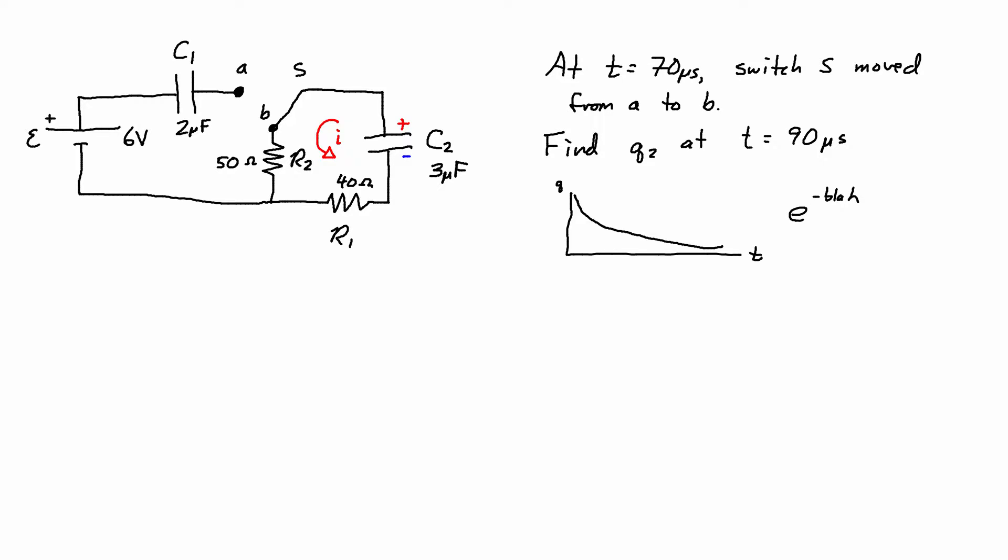Now Q2 as a function of time is going to be Q2 initial times e to the power of negative T over RC. But I need to be careful because I already defined time zero as another part of this problem. So I'm going to write this in terms of delta T to make it more clear. So we have Q2 initial e to the power of negative delta T over RC.